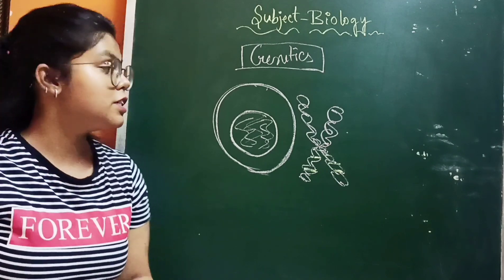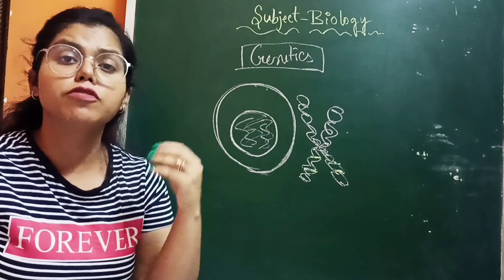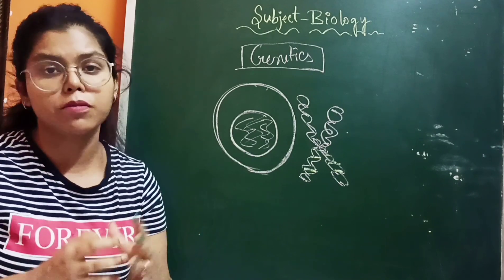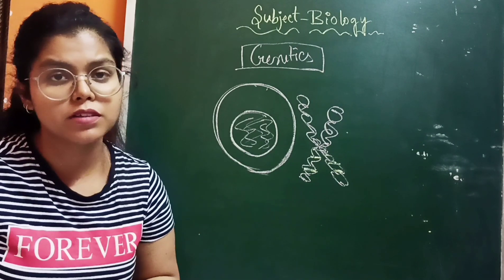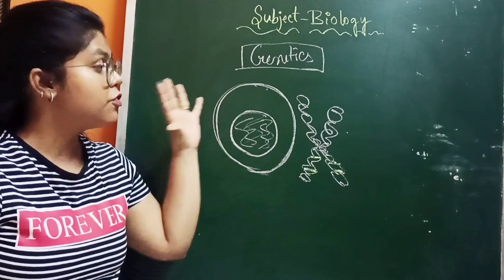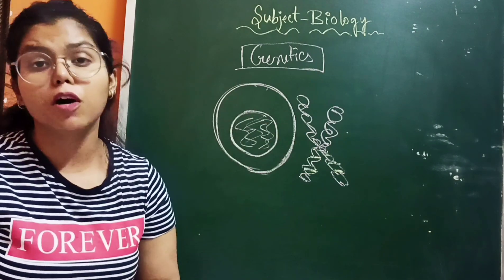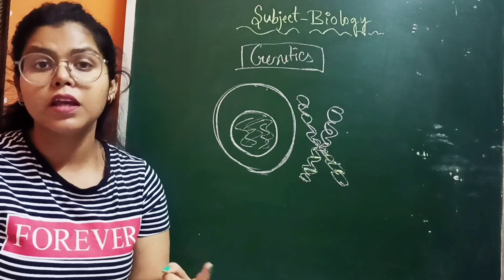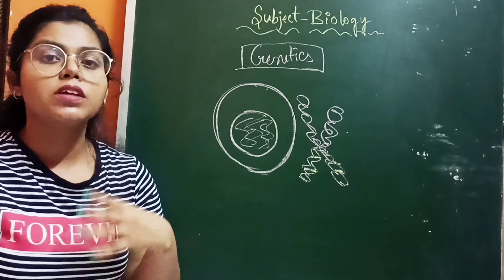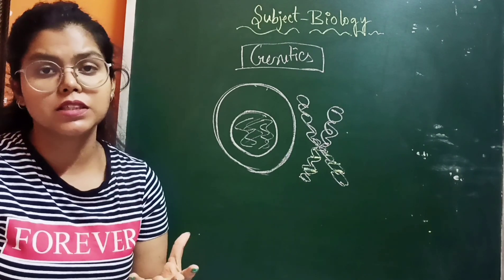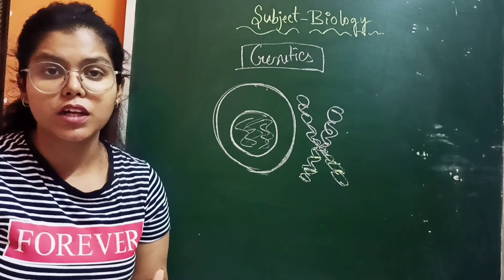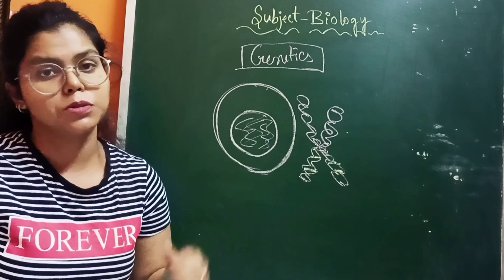This is basically the introductory part of this chapter — the concept of genetics. Further, we will discuss different types of mechanisms, experiments, and topics in genetics such as crossing over, recombination, linkage, and more.